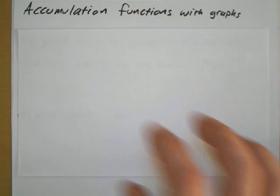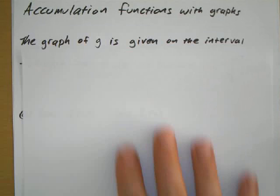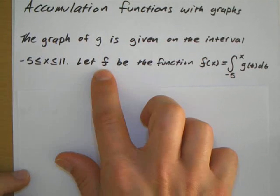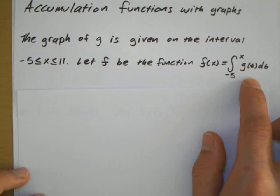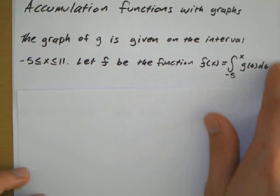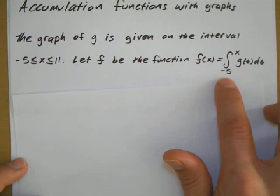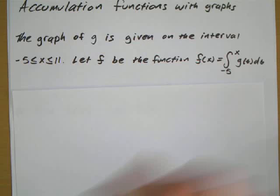Hi, this is a video on accumulation functions with graphs. The example I'll go over states that the graph of g is going to be given, and f is going to be the accumulation of the graph of g. So basically f depends on how much area we accumulate from the graph of g, starting from negative 5 up until whatever x value we designate.